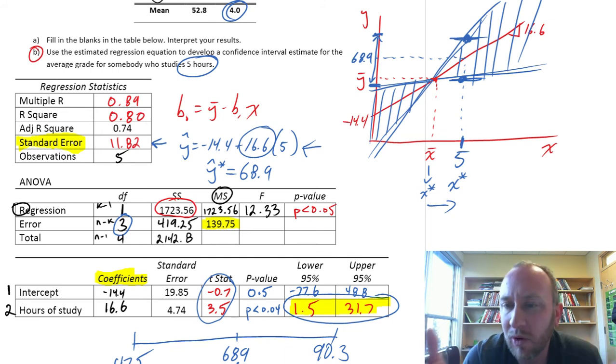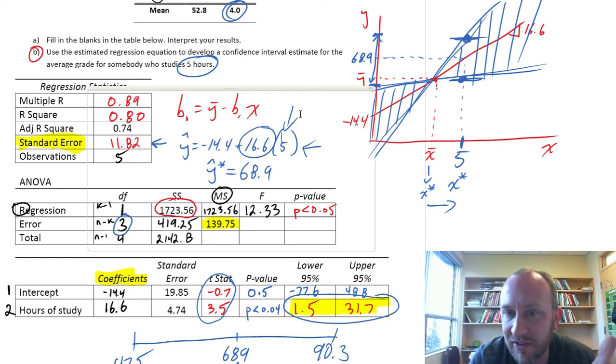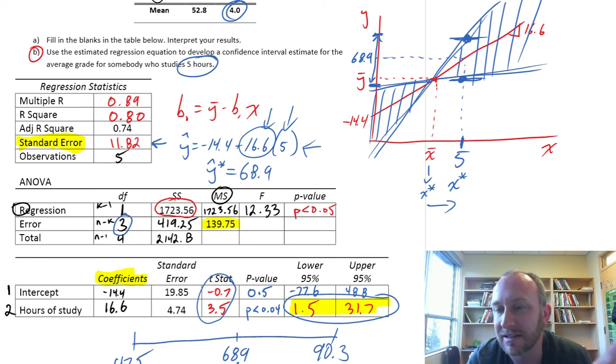Okay, so that's one use for that estimated regression equation, and it's just the interpretation of that coefficient itself. For each additional unit of change in our independent variable, the dependent variable increases by 16.6.